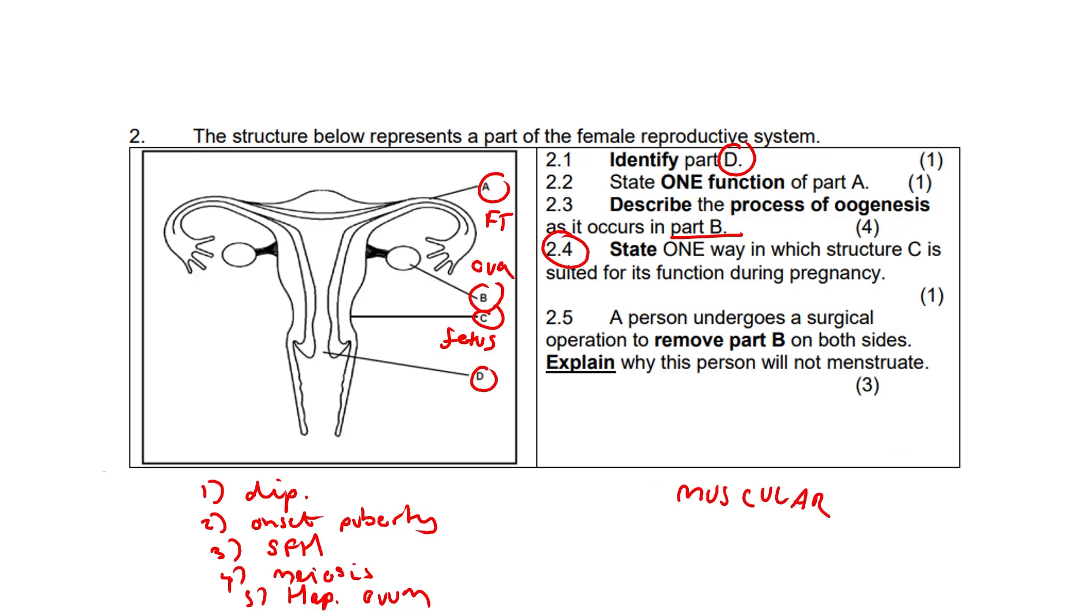2.5: A person undergoes a surgical operation to remove part B on both sides. Explain why this person will not menstruate. Firstly, the ovaries have been removed, so no estrogen will be secreted. Remember, estrogen is spelled with an O. The endometrium lining will not thicken, and if there's no thickening, there will be no menstruation and no follicles can develop as well.